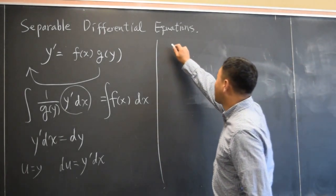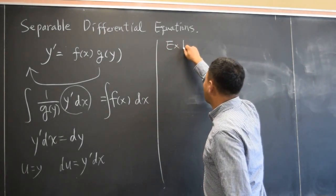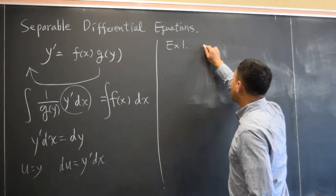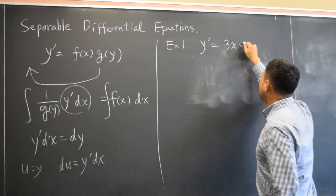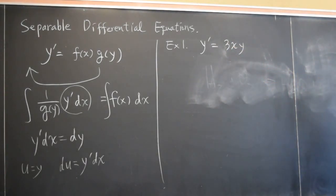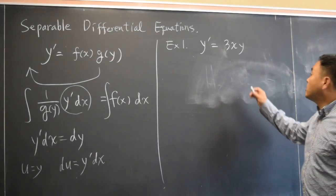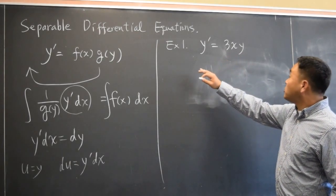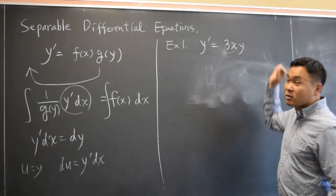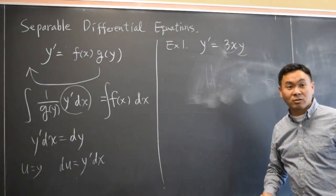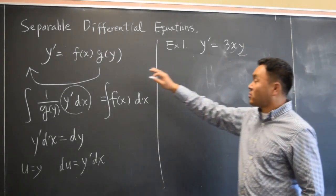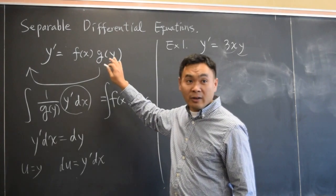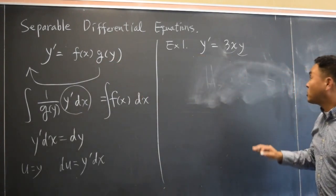The simplest one I can think of is example 1: y prime equals say something like 3xy. So you do see that it's a function of x. 3x is a function of x. y itself is a function of y, which you can rewrite as function of x times function of y, right? In that case, what's our strategy?